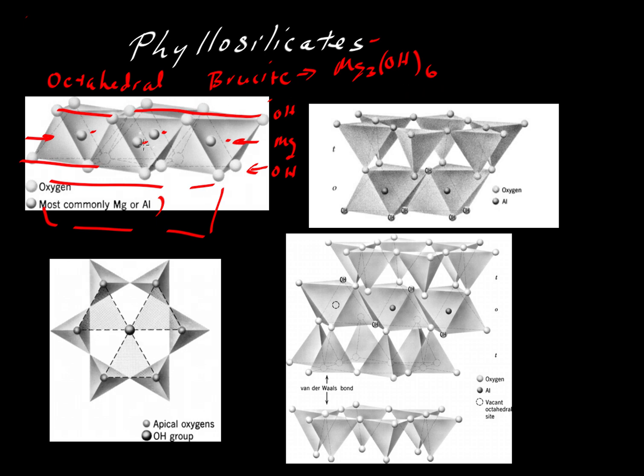If instead we filled up all of the central cations with aluminum, aluminum has a three-plus charge. So for every three magnesiums, we would only need two aluminums to provide the charge balance for six hydroxyl units. So we would have the mineral formula Al2(OH)6, and that is the mineral gibbsite.